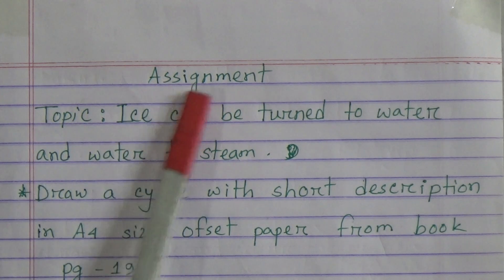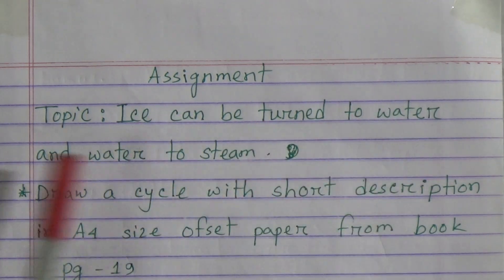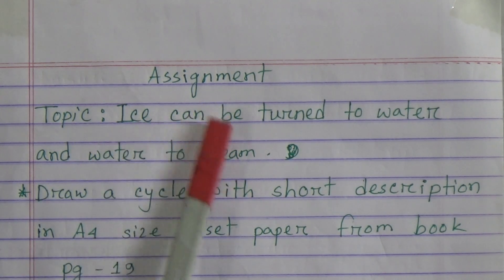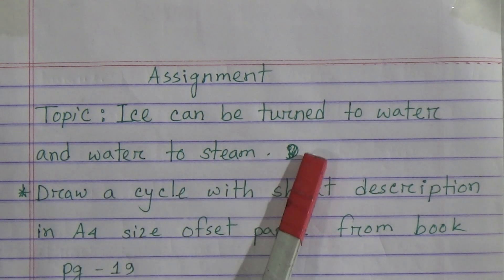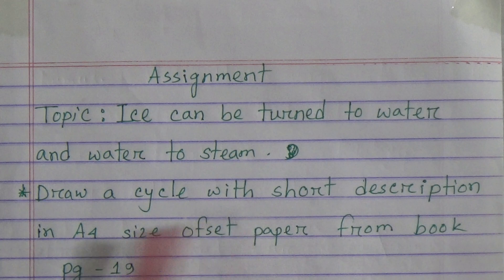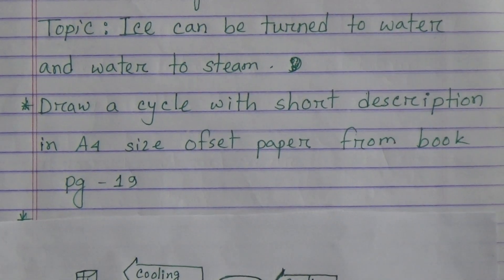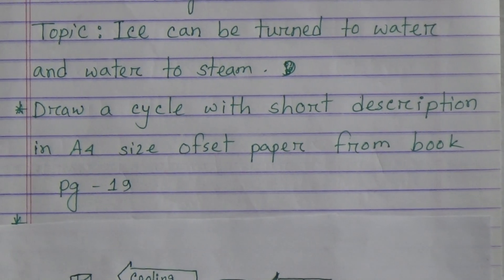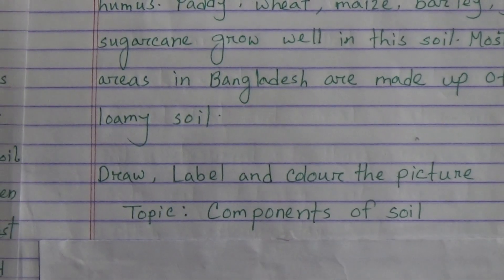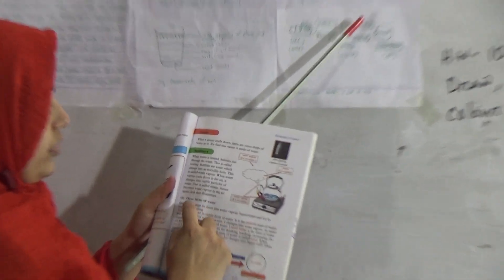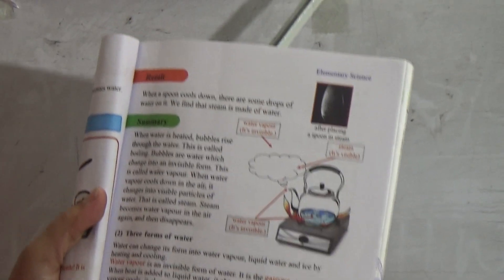My dear students, now I will discuss your assignment. Your assignment topic is: 'Ice can be turned to water and water to steam.' Draw a cycle with a short description on a four-size offset paper. Refer to your book, page number 19. This is your science textbook and on page 19 there is a figure you have to draw for your assignment. You also have to write a short description about the three forms of water from that page.